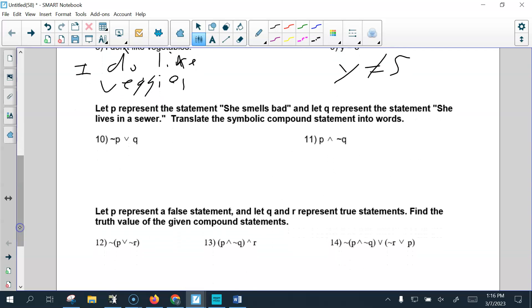Alright. So we know that P is she smells bad, and Q is she lives in the sewer. So this is not P. So she smells bad. That would be not. So she does not smell bad. This is an or, and then we just say Q. She lives in a sewer.